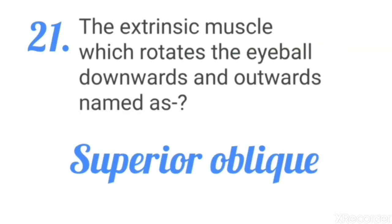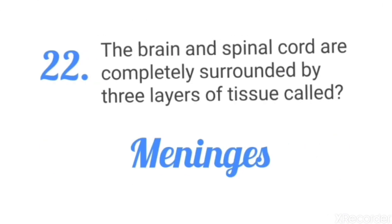The extrinsic muscle which rotates the eyeball downwards and outwards is named the superior oblique. The brain and spinal cord are completely surrounded by three layers of tissue called meninges.